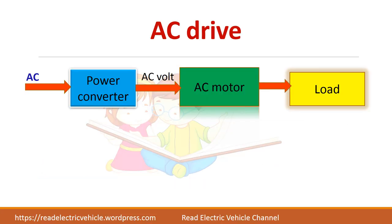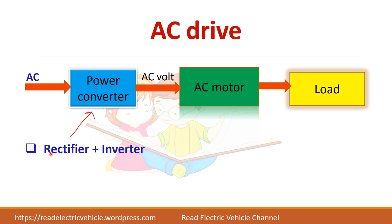In an AC drive we have an AC motor supplying the load. This AC motor will be fed through a power converter from the AC supply. The power converter can be a rectifier and an inverter — AC will be converted into DC by the rectifier, and since we need AC output, we need an inverter. This combination circuit can be used as a drive for an AC motor.